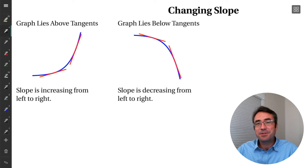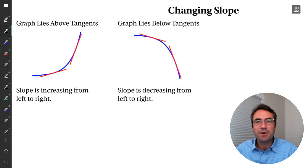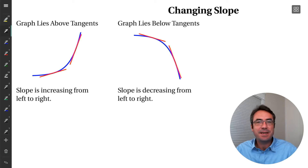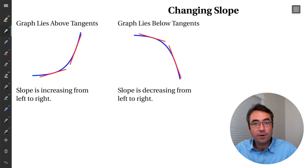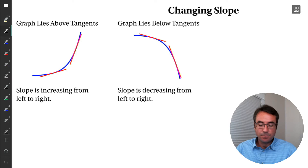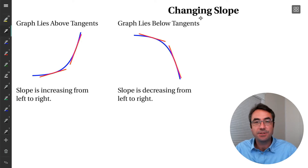The next big definition we're going to look at is concavity, so the shape of our graph. And how we're going to introduce this idea is by looking at the slope of our curve, and more specifically, what happens when that slope changes.